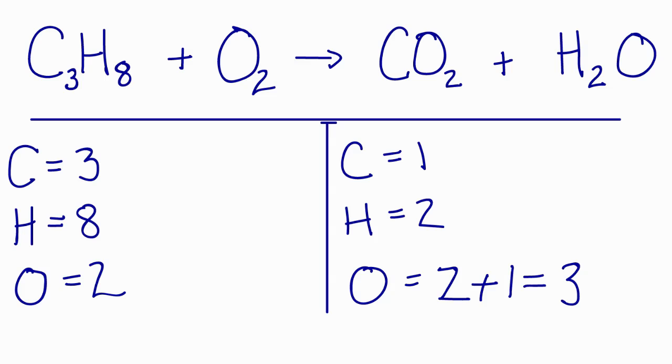I've added up each atom, each type of atom, on each side of the equation. We can see the carbons are not balanced. So I have three on the left and only one on the right.